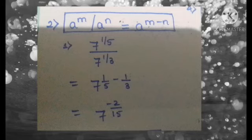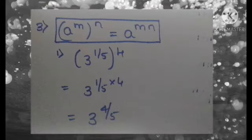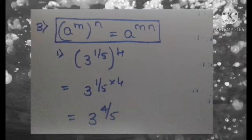Let's take the next example for the third law: a raised to m into n equals a raised to m into n. The question is 3 raised to 1/5, whole raised to 4, which equals 3 raised to (1/5 into 4), which is 3 raised to 4/5.